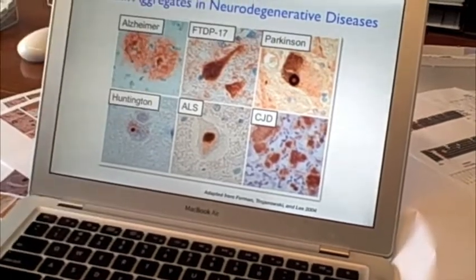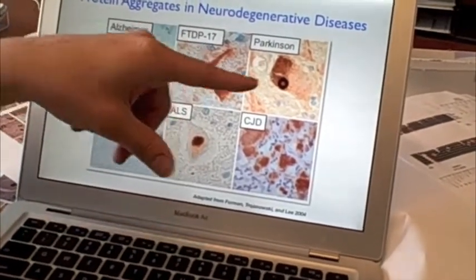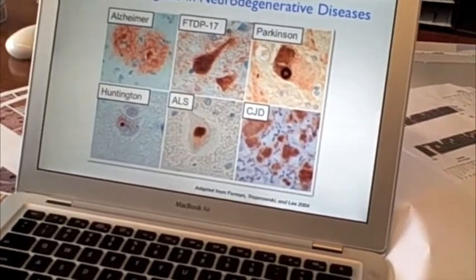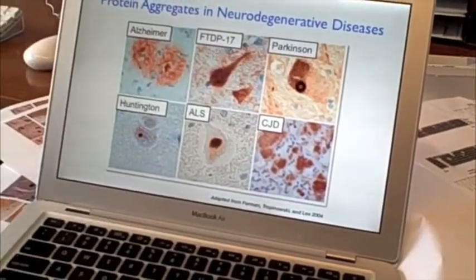Or neurofibrillary tangles within neurons, or in Parkinson's disease, these accumulations of a protein called alpha-synuclein accumulate within neurons, and these are called Lewy bodies.